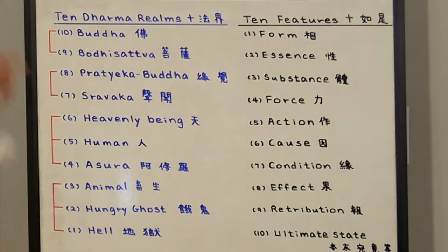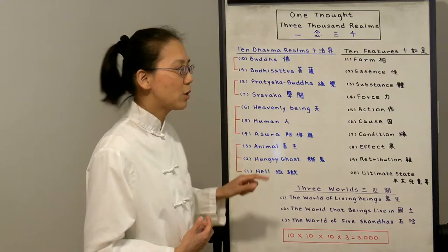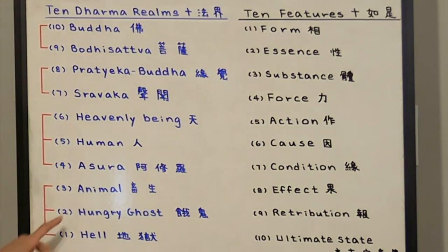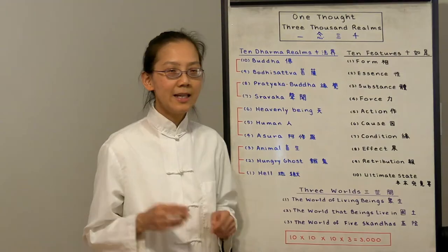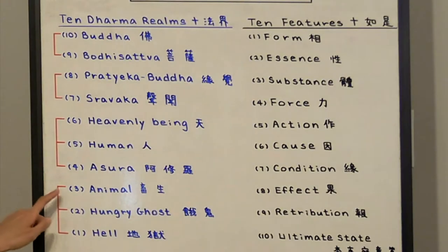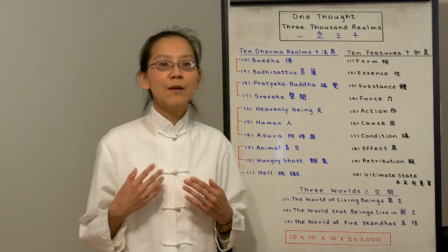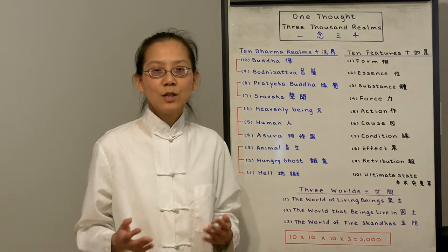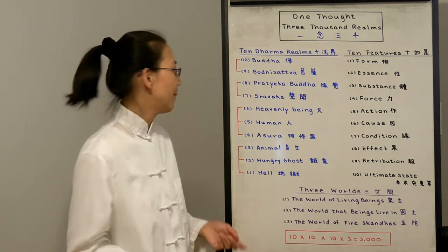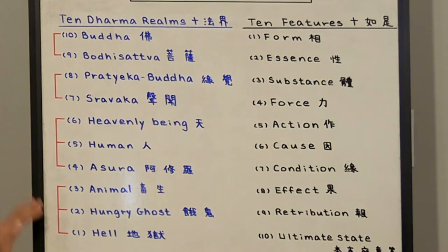First let's look at the 10 Dharma realms. There are 10 places that we can be in. From the bottom there's hell, which is full of suffering and torment. Number two, hungry ghosts—they are cursed with insatiable hunger. Number three, the animal realm—they are full of ignorance, just eat and sleep all day long and they're content with it. These are the three lower realms.